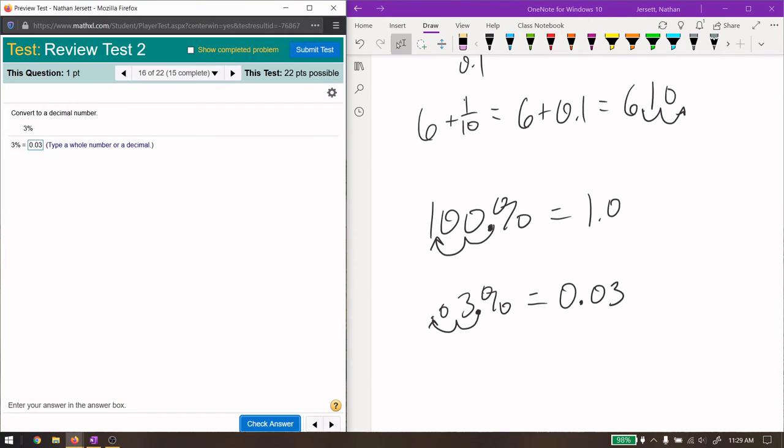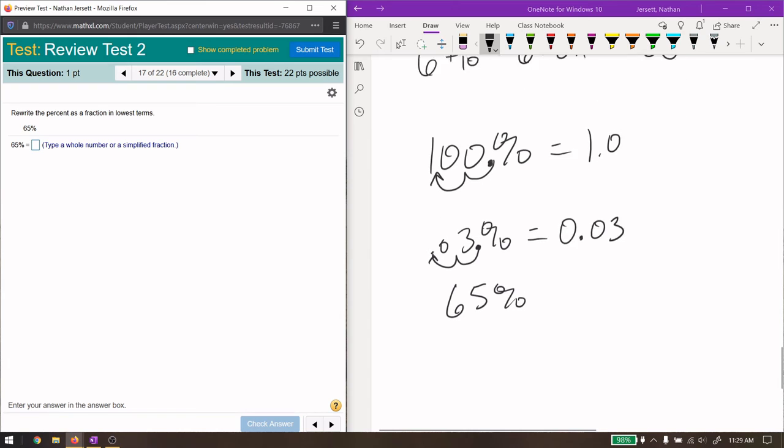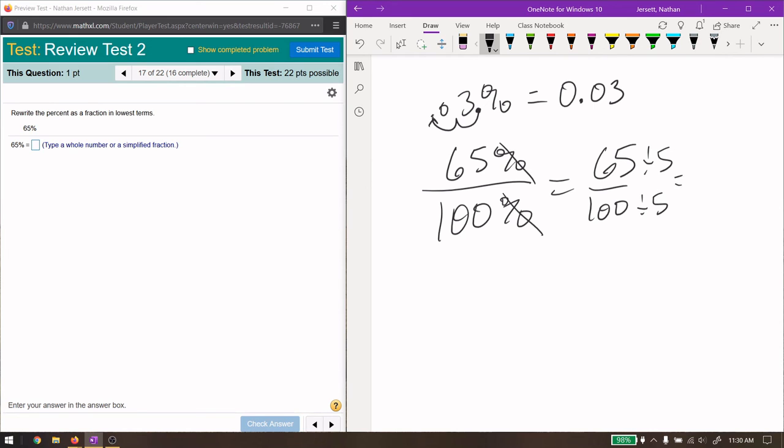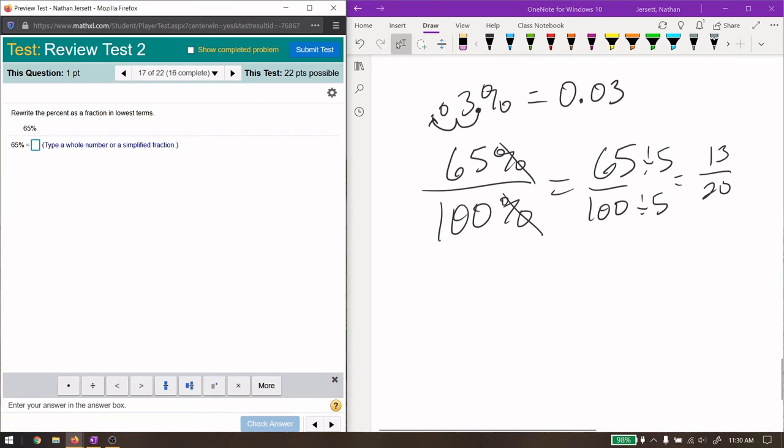For 65%, same process. Oh, it says rewrite the percent as a fraction in lowest terms. So if I were just writing 0.65, I would have gotten the answer wrong. We want a fraction. Going from a percentage to a fraction, all you have to do is divide by 100. The percent signs cancel, and now we have 65 over 100. You always need to reduce, so divide by 5 on top and bottom. You get 13 over 20, and that cannot be reduced any further.